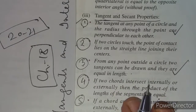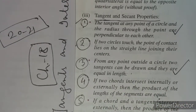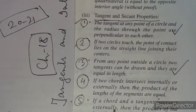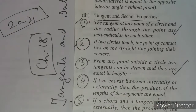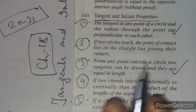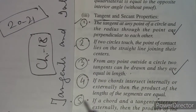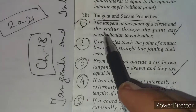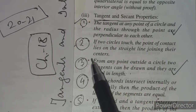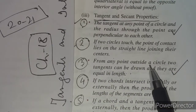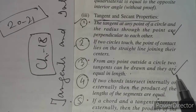Earlier in the previous year's syllabus, there were a total of six properties — their applications and results were discussed. The first property was: the tangent at any point of a circle and the radius through the point are perpendicular to each other. The second one: if two circles touch, the point of contact lies on the straight line joining their centers. The third: from any point outside a circle, two tangents can be drawn and they are equal in length.